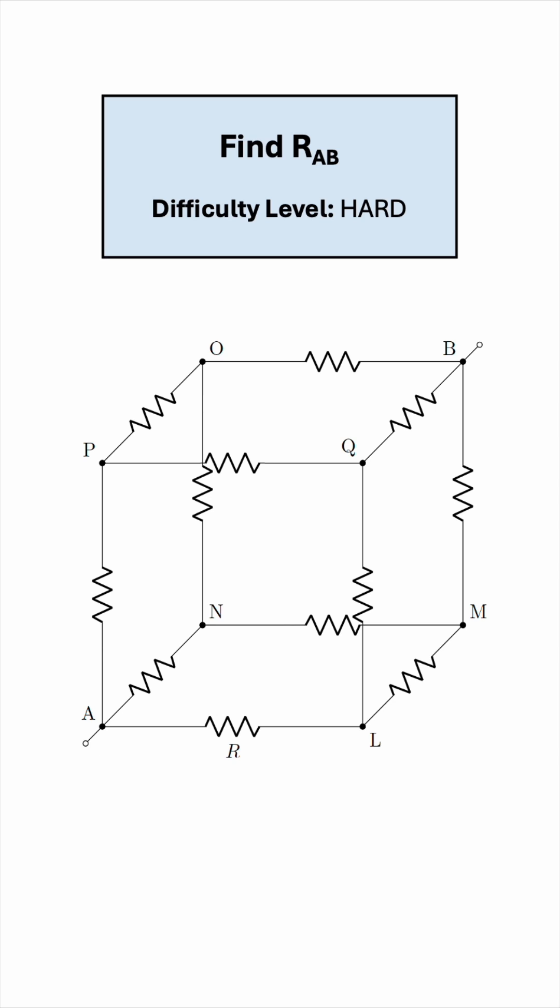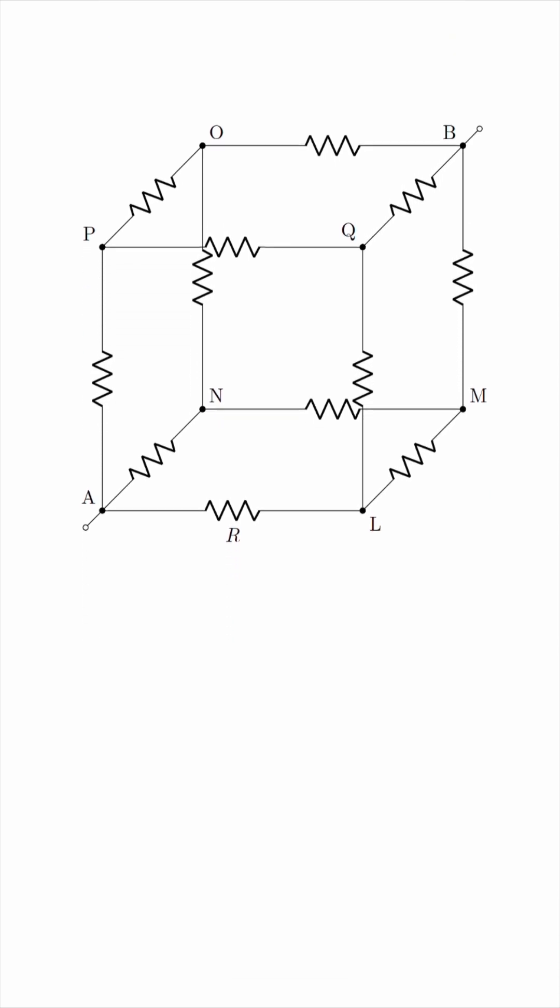I'll give you a couple of choices, let's make them four as usual. Is it 5 over 6 R, 11 over 12 R, just R, or 6 R? Notice that R is the individual resistance of any of these resistors, so all of the resistances are equal. Give this problem a try and keep watching to see the solution.